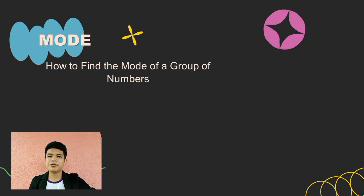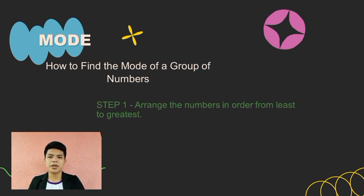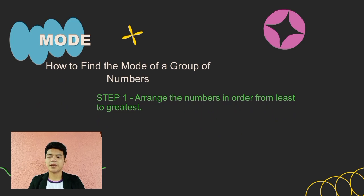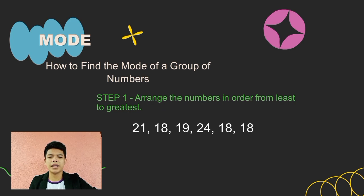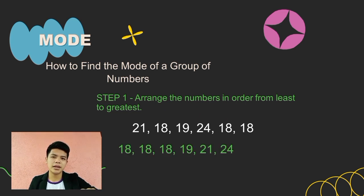Here is how to find the mode of a group of numbers. Step 1: arrange the numbers in order from least to greatest, so that we can identify the mode. Take this example: 21, 18, 19, 24, 18, and 18. If we arrange them, we have: 18, 18, 18, 19, 21, and 24.